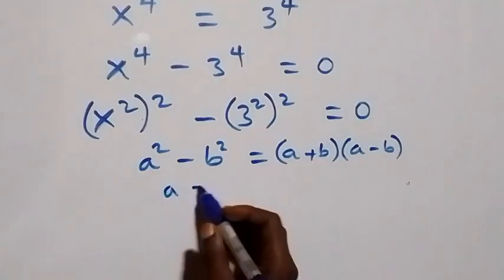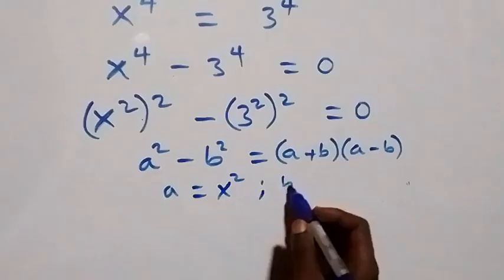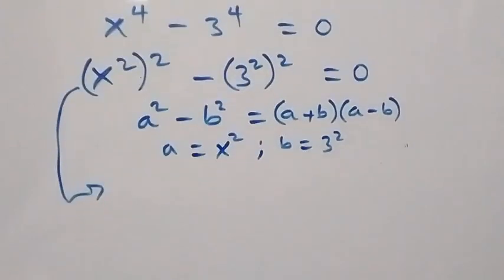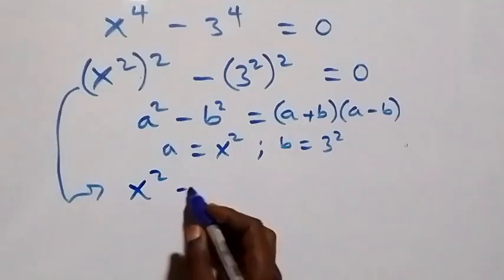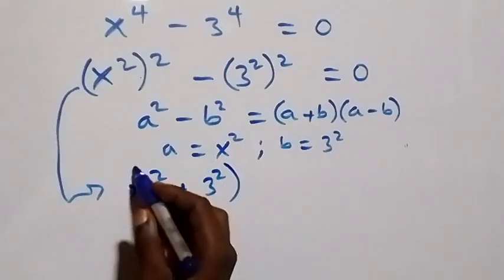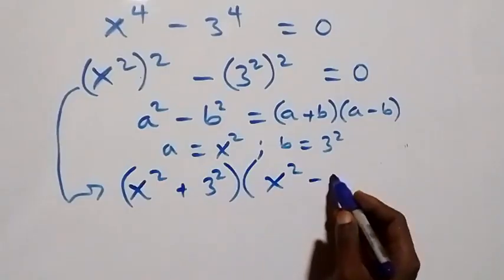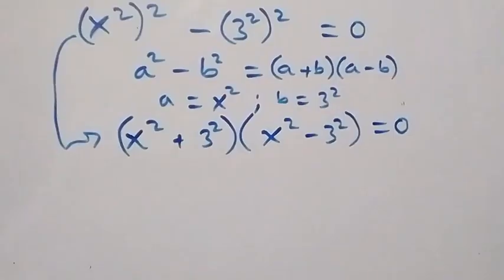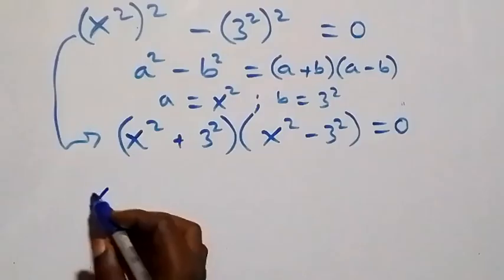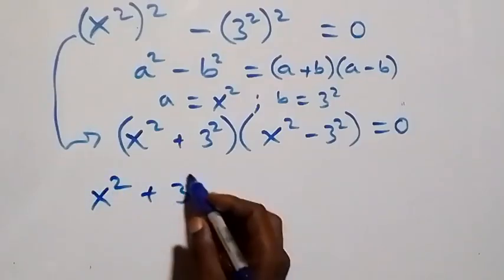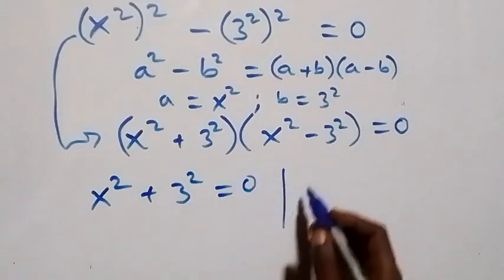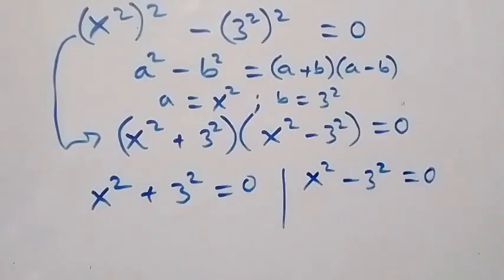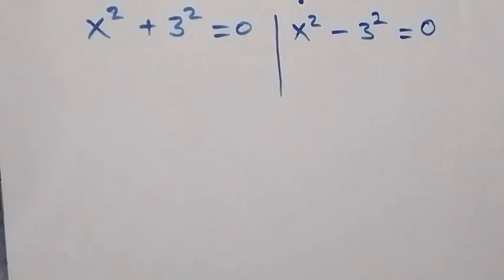Here, a is the same thing as x squared and b is the same thing as three squared. Then the equation becomes: open bracket x squared plus three squared, close bracket, times open bracket x squared minus three squared, close bracket, equals zero. From here we have two cases: x squared plus three squared equals zero, or x squared minus three squared equals zero.